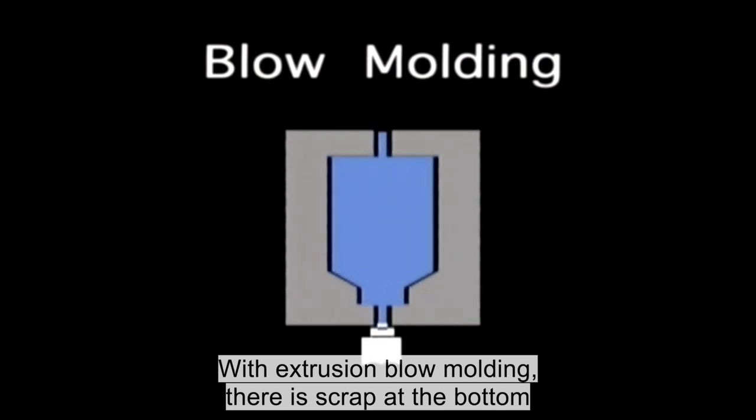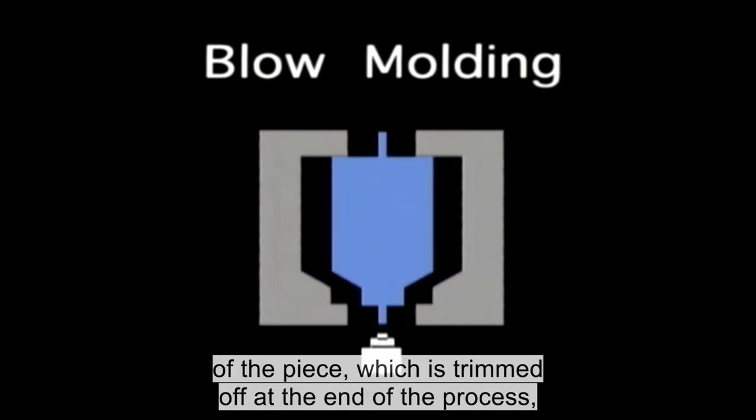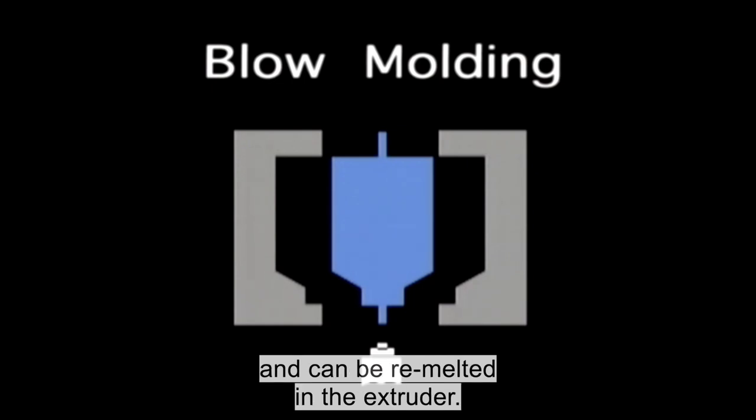With extrusion blow molding, there is scrap at the bottom of the piece which is trimmed off at the end of the process and can be remelted in the extruder.